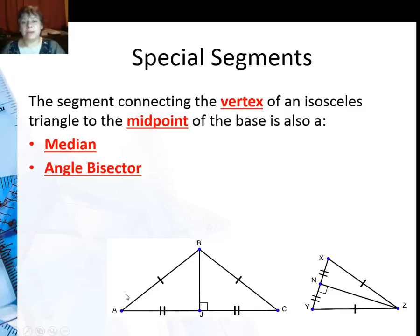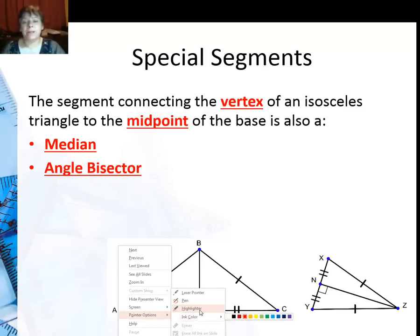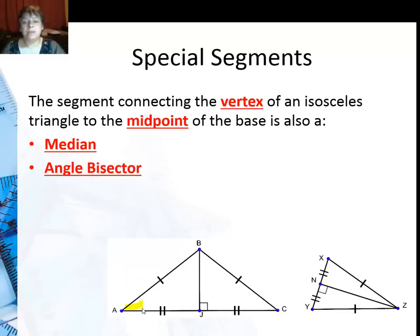It's also an angle bisector since these two angles are congruent. Let me go ahead and highlight that for you. Since this angle is congruent to this angle and these two angles are 90 degrees, you could say by the third angle theorem that angle ABJ and angle CBJ are also congruent. So that has to be an angle bisector.